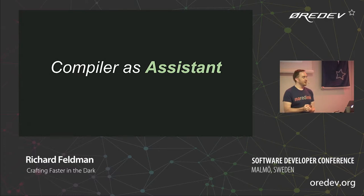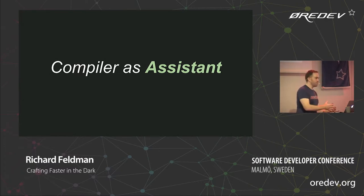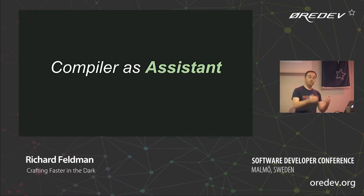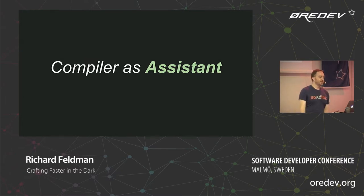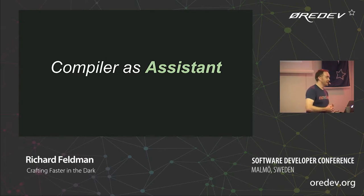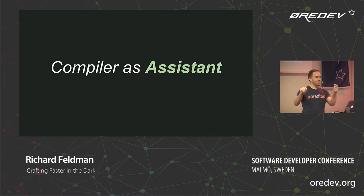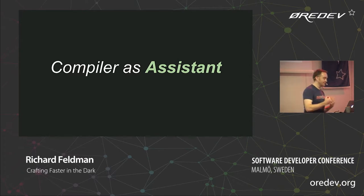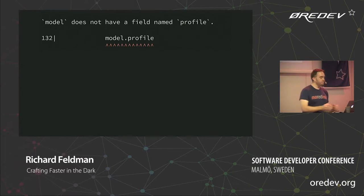This is how Elm gets away with saying we don't have runtime exceptions, because they're really not a thing. There's no try-catch in Elm — what would you even do with that? You can still get a stack overflow or run out of memory — there are some cases where a crash is possible — but they're so rare they're just not worth talking about. And this gets to the idea of: what if your compiler were not just a gatekeeper, but actually an assistant? What if it was helping you say: hey, you forgot this. Not just: no, you're wrong, try again.